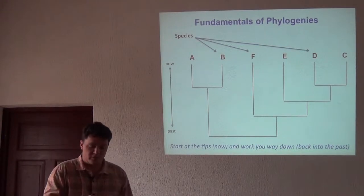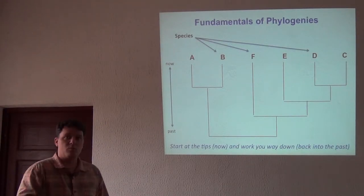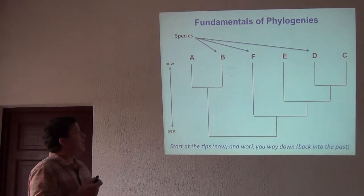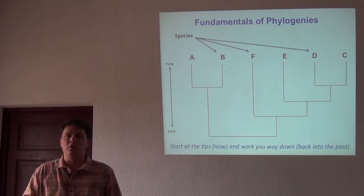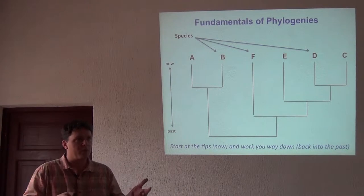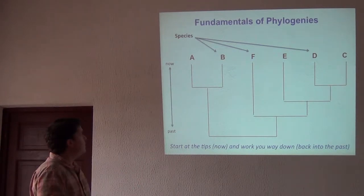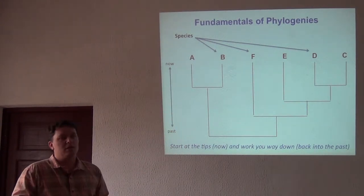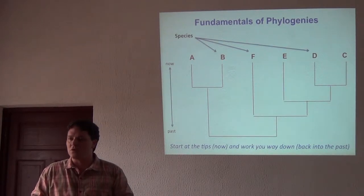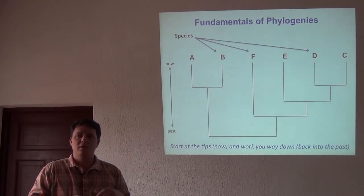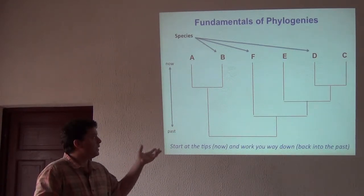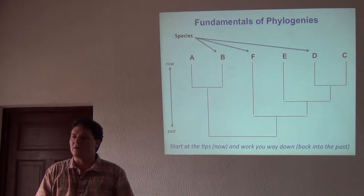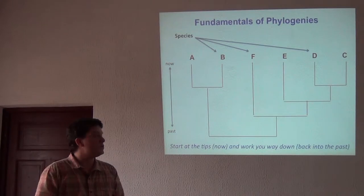First I want to talk about the fundamentals of interpreting phylogenies, so that as we move on to using phylogenies for understanding diversity and classification, we all understand them the same way. Here's a typical evolutionary tree — the family tree you might have seen in a National Geographic article or scientific literature. This is a topology, an arrangement of taxa into an evolutionary branching diagram that tells us something about their hypothesized or inferred evolutionary relationships.